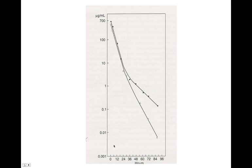Here we have time on the x-axis and log concentration on the y-axis — a natural log concentration curve. Since it's log, if it were one compartment, we'd expect this to be straight. As you can see, it bends a little, and this one really bends — that's the patient with an effusion. There's a little bend here showing a second compartment, but this one is much more extreme, indicating a second or even third compartment due to the effusion.